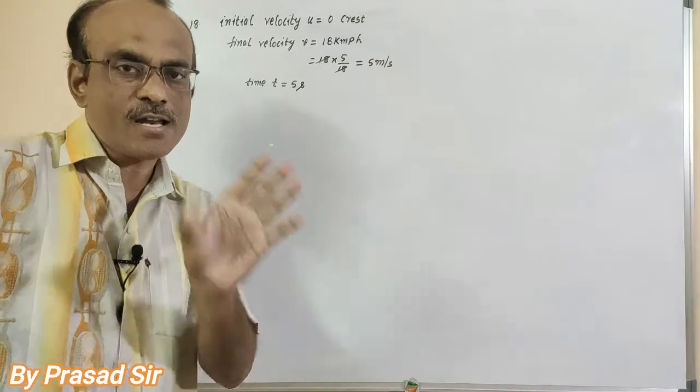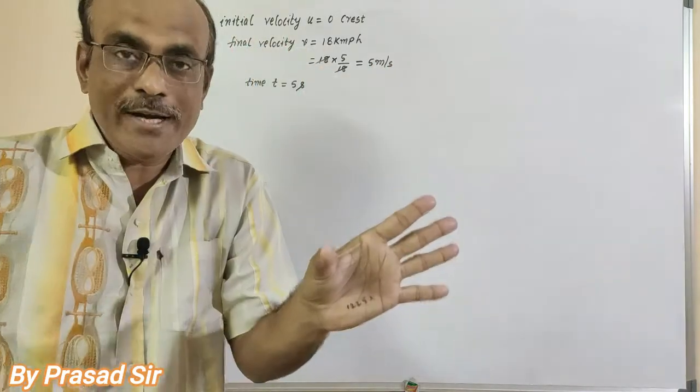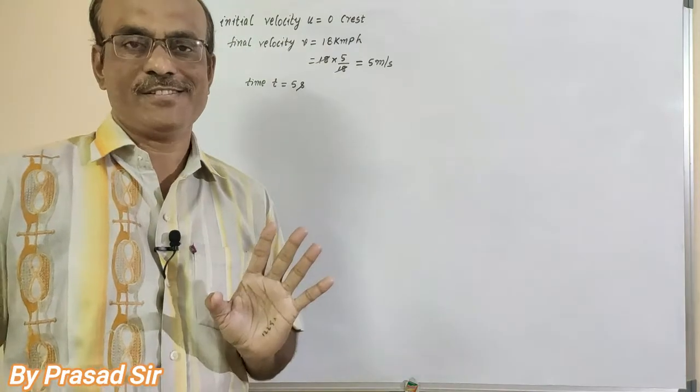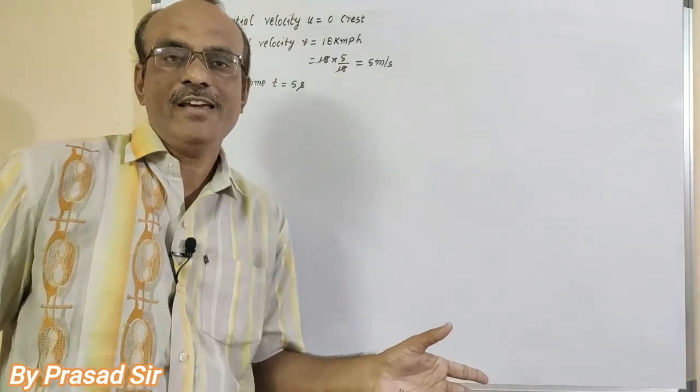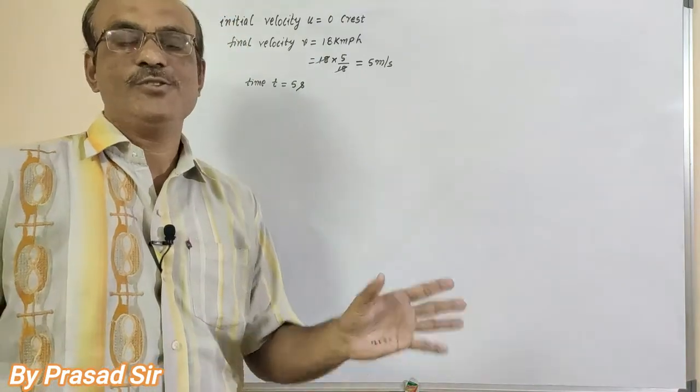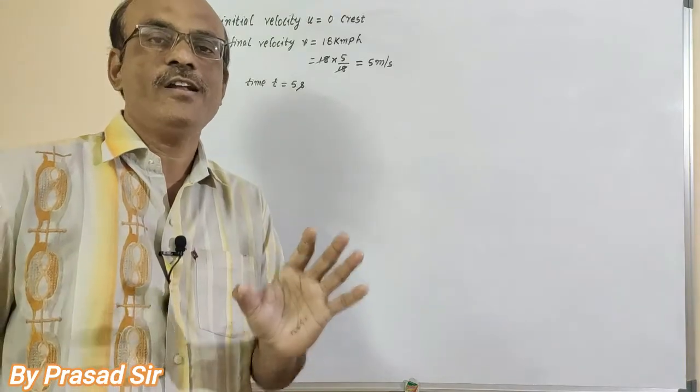In this question, a particle starts from rest and acquires a velocity of 18 kilometers per hour in 5 seconds. Find average velocity and distance covered. So to calculate average velocity and distance covered, first of all we have to write everything here.